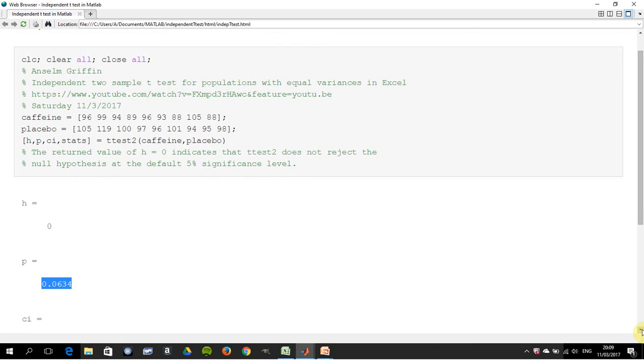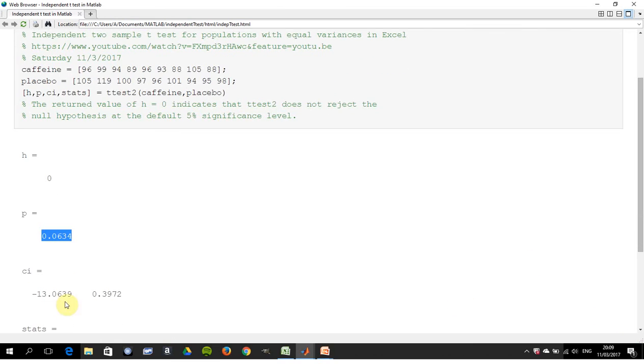The confidence interval: we're saying the difference between the two values, we're 95 percent sure that the difference in means lies between minus 13.0639 and 0.3972. So minus 13 to plus 0.39. Since zero lies in that interval, that's another way of saying we have no reason to reject the null hypothesis.